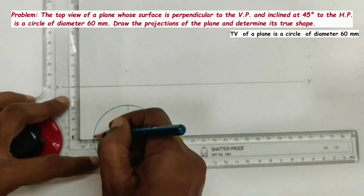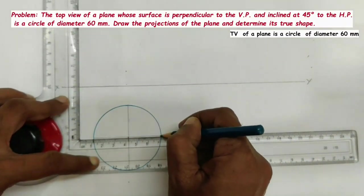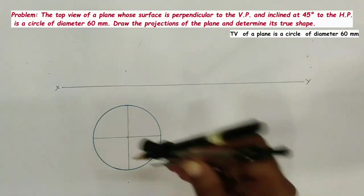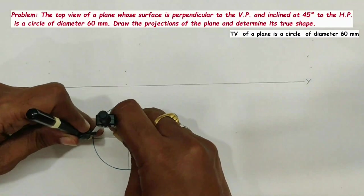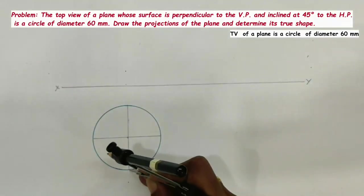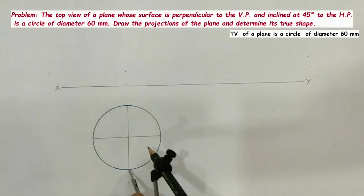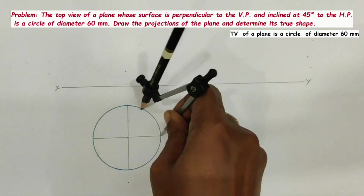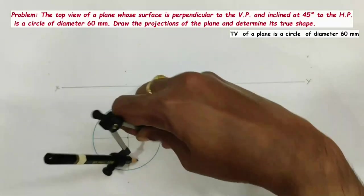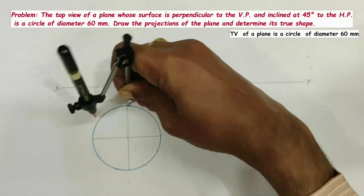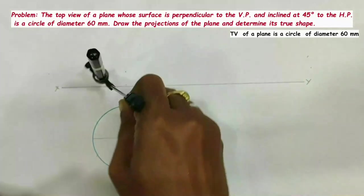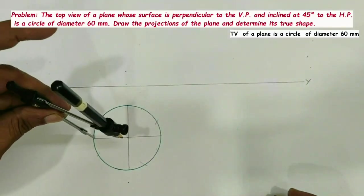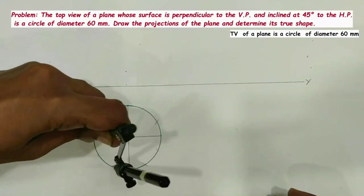After drawing the XY line, draw a circle with radius 30 mm in the top view. Then divide the circle into 12 equal parts. For dividing the circle into 12 equal parts we can use either a protractor or compass. We will divide the circle into 12 equal parts by using a compass. Take the radius of the circle, say 30 mm, and using one end of the diameter as center, draw two arcs on the circle. Similarly, using the other end of the diameter as center, draw two arcs on the circle. Repeat with all diameter ends as centers, using the circle's radius, to draw two arcs at each end.